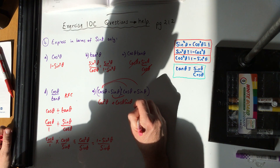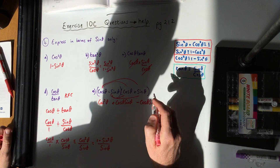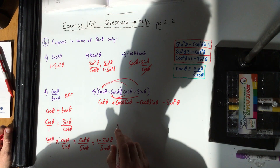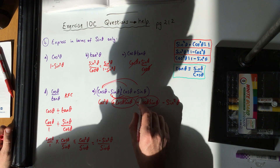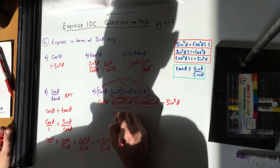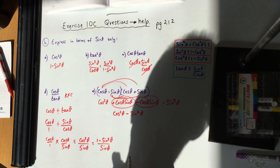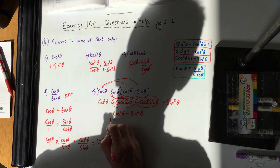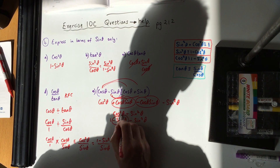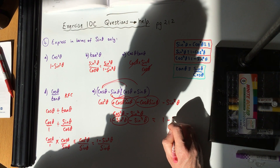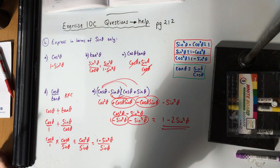For the bracket expansion: multiplying out gives cos²θ plus cosθ sinθ minus sinθ cosθ minus sin²θ. The middle two terms cancel out, leaving cos²θ minus sin²θ. Then substituting cos²θ = 1 minus sin²θ, that becomes 1 minus 2 sin²θ.